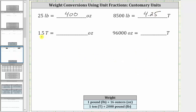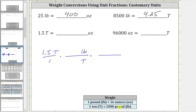Next we want to convert 1.5 tons to ounces. We first write 1.5 tons as a fraction with a denominator of one. Notice there is no direct conversion from tons to ounces. Since one ton equals 2,000 pounds, we can use this conversion to convert tons to pounds, and then convert pounds to ounces using one pound equals 16 ounces. Because we have to use two conversions, we need two unit fractions. Let's first convert tons to pounds — because we want tons to simplify out, tons must be in the denominator of the unit fraction and pounds in the numerator. Since one ton equals 2,000 pounds, the first unit fraction is 2,000 pounds over one ton, and the units of tons simplify out.